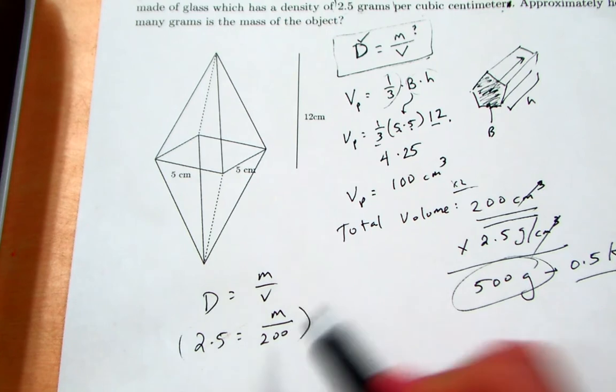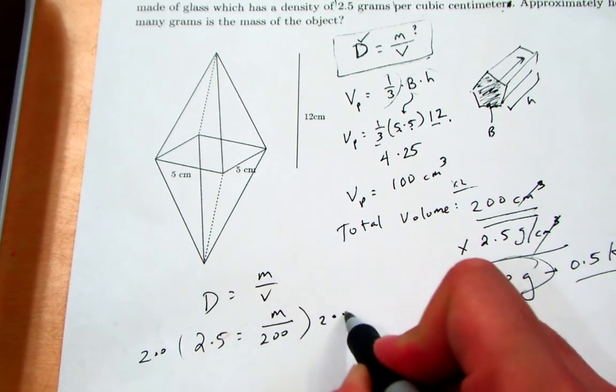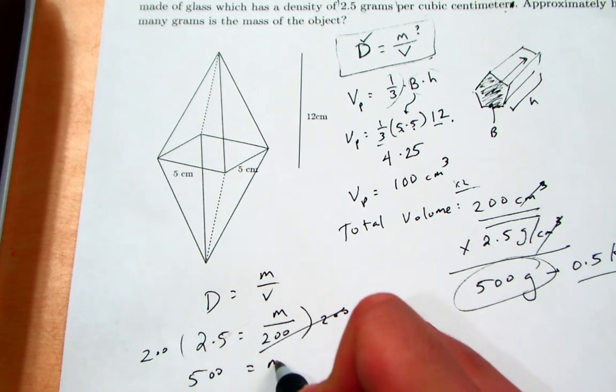Well, this would then show you that you simply have to multiply both sides by 200 in order to isolate the mass, and that still gives you 500 for the mass.